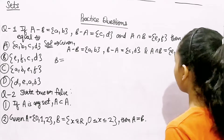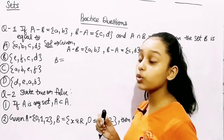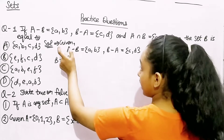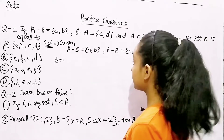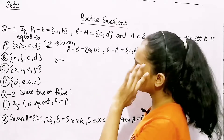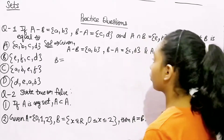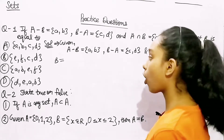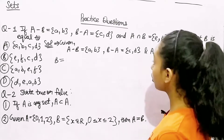In set difference, we only write elements that are not in the other set. So A minus B = {a, b} means elements a and b are in set A but not in set B. This confirms that a and b are not going to be elements of set B. Now for B minus A = {c, d}: c and d are in set B but not in set A.